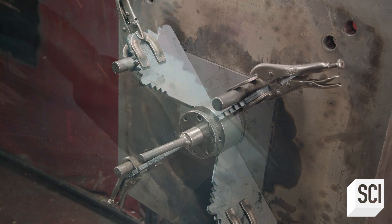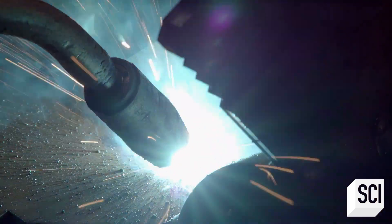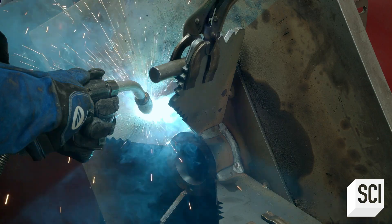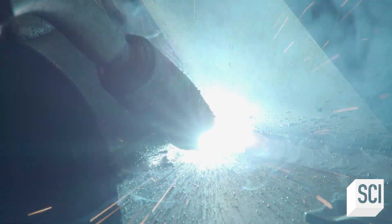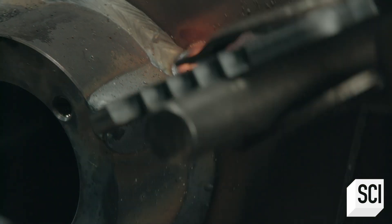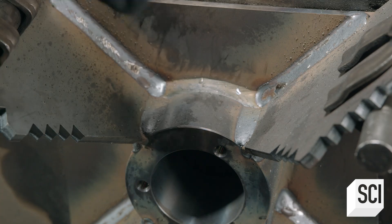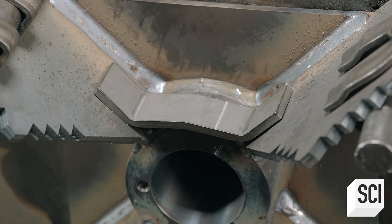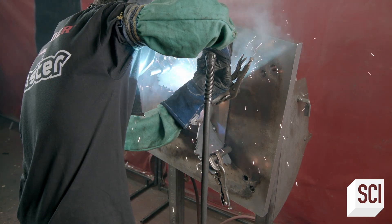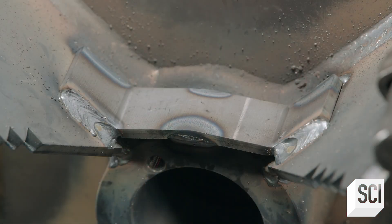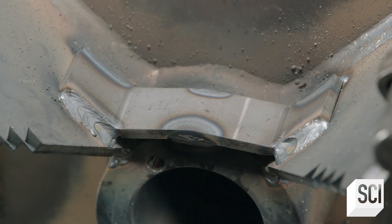After clamping each blade in position, he fuses them to the backing plate. Next, he welds steel reinforcement straps between each of the four blades. The straps add strength and stability, thereby increasing the lifespan of the impeller.